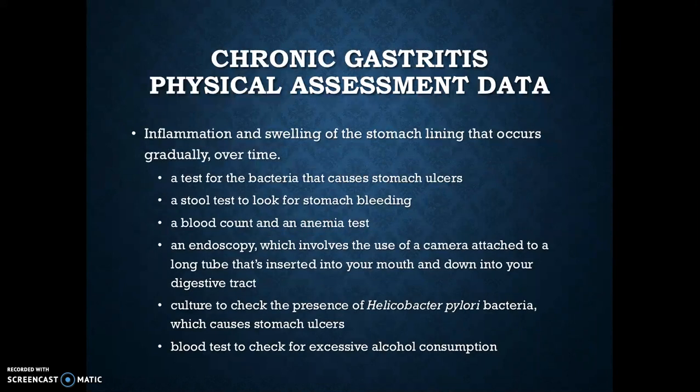Whereas chronic gastritis develops gradually over a longer period of time. The physical assessment for chronic gastritis would include a test for bacteria that causes stomach ulcers, a stool test to look for stomach bleeding, a blood count and anemia test, an endoscopy involving a camera attached to a long tube inserted into the mouth going down into the digestive tract, a culture to check for the presence of H. pylori bacteria, and a blood test to check for excessive alcohol consumption.